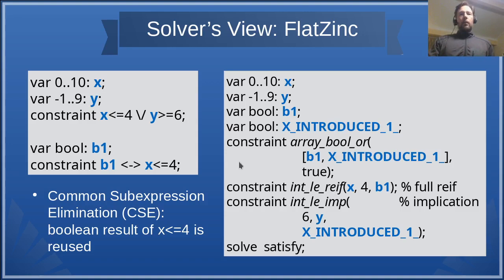We also see that the Boolean variable for the left inequality, the b1, is reused in the disjunction. Which is an example of common sub-expression elimination or CSE.